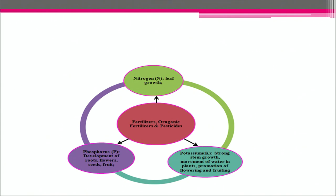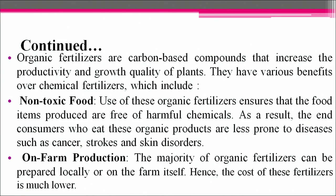Organic fertilizers and pesticides include nitrogen fertilizers, which are essential for leaf growth; potassium, which is essential for strong stem growth, movement of water in plants and promotion of flowering and fruiting; and phosphorus, which is essential for the development of roots, flowers, fruits and seeds. Organic fertilizers are carbon-based compounds that increase the productivity and growth quality of plants. They have various benefits over chemical fertilizers, including producing non-toxic food. The use of organic fertilizers ensures food is free of harmful chemicals, so consumers are less prone to diseases such as cancer, strokes and skin disorders.